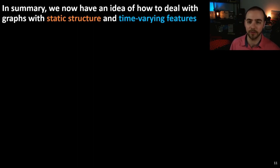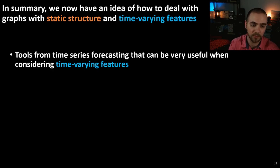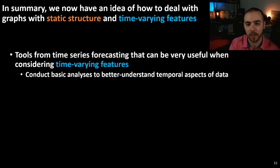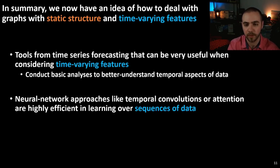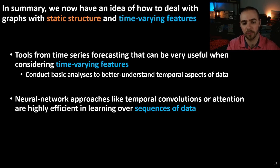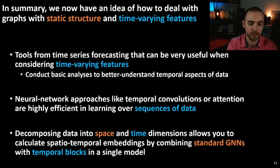In summary, we now have an idea of how to deal with graphs with static structure and time-varying features. Tools from time series forecasting are extremely useful, and basic analyses of these features help you understand the temporal aspects of your data and select appropriate models. Neural network approaches like temporal convolutions or attention-based methods are highly efficient for learning over longer sequences. Finally, you can decompose your data into space and time dimensions, combining a standard GNN with a temporal block to compute a spatiotemporal embedding in a single model. Thanks for watching, and we'll see you in the next video.